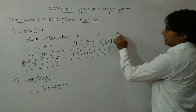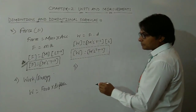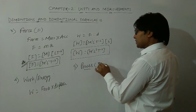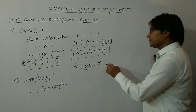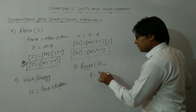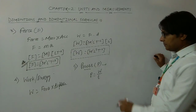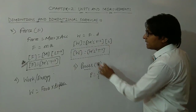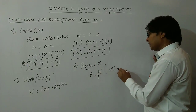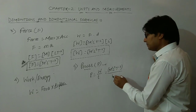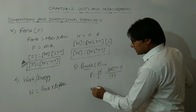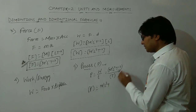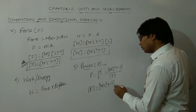Moving on to the next physical quantity — power, denoted by P. Power is the rate of doing work, expressed as work done per unit time. Writing the dimensional formula: work is M¹ L² T⁻², divided by time T. Therefore, the dimensional formula of power is M¹ L² T⁻³.